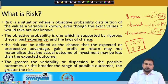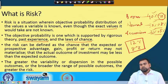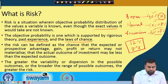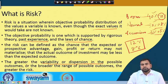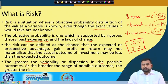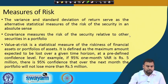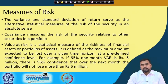The risk we face is not basically related to the actual return you are getting — it is related to the variation of the return with respect to the expected return we calculated before. The variability or the dispersion in the possible outcomes basically measures the risk of that particular series or distribution. This is the basic concept of risk as always observed in the market.